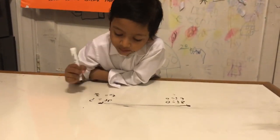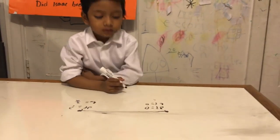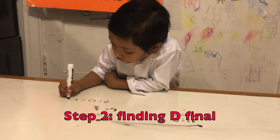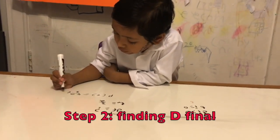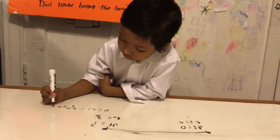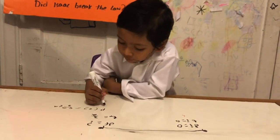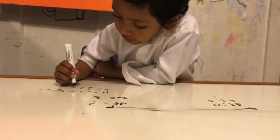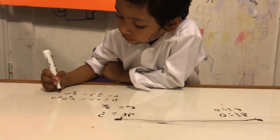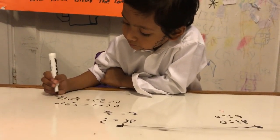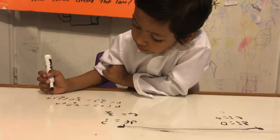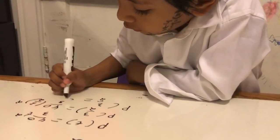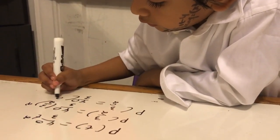So we have to find d-final. p(t) is equal to 40 over 3t squared. We replace all the t's with 3 over 2. So p(3/2) is equal to 40 over 3 times (3/2) squared. So p(3/2) is equal to 40 over 9 over 4.